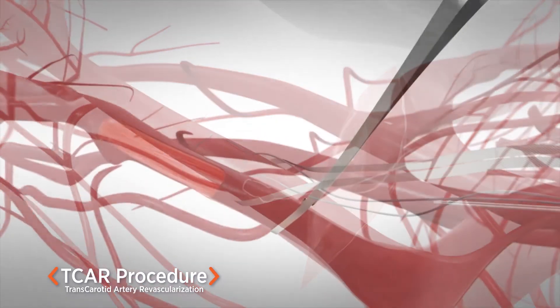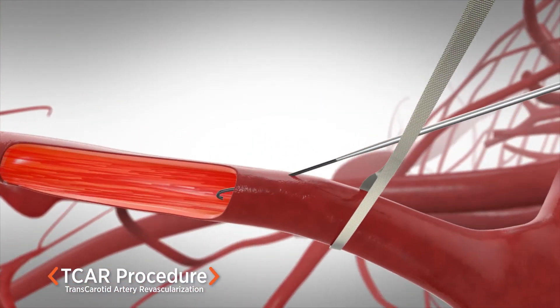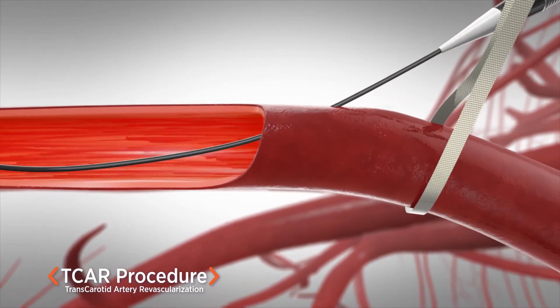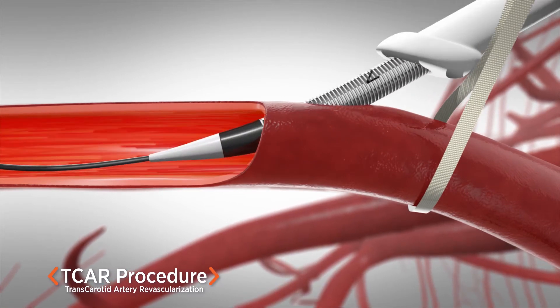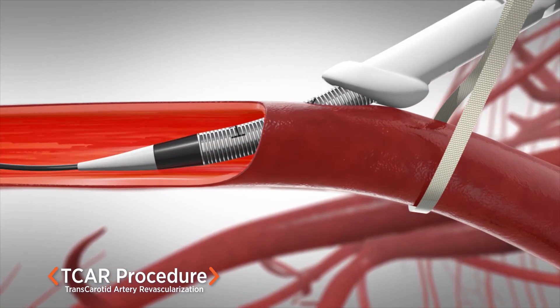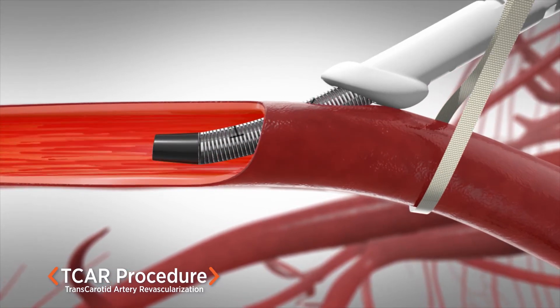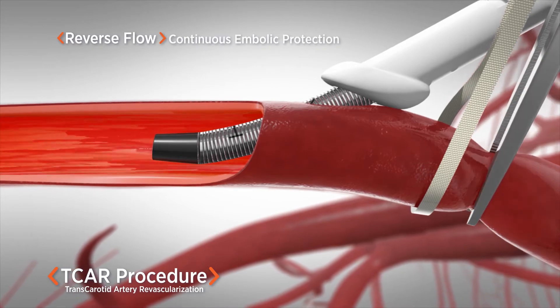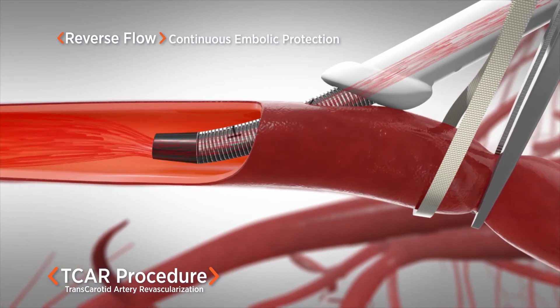A guide wire is inserted directly into the carotid artery through a needle for placement of a specially designed sheath. This special sheath enables us to reverse the blood flow in the carotid artery during the procedure for cerebral protection.